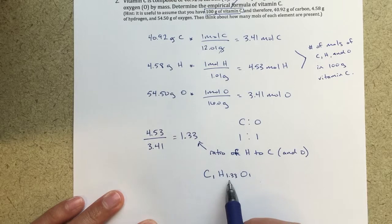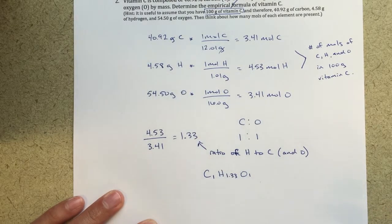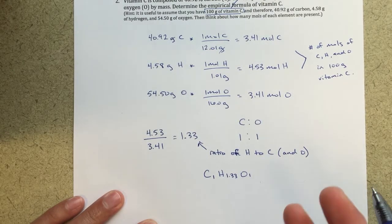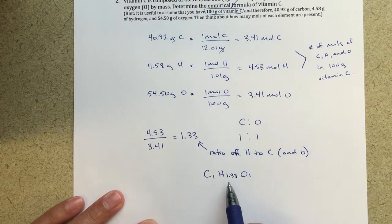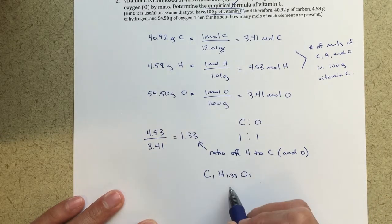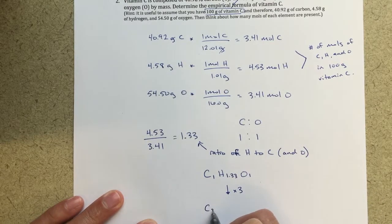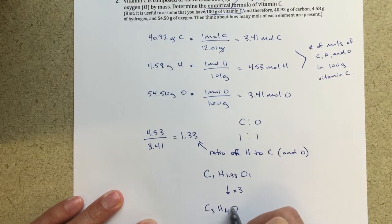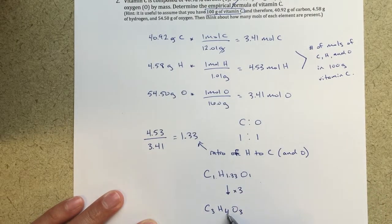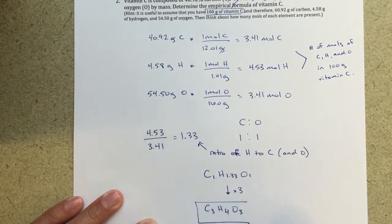The problem is we can't have 1.33 atoms. We can't break atoms into pieces. So the question is, how do I multiply 1.33 by a whole number—by 2, 3, or 4—so that it calculates to a whole number? If I take all these numbers and multiply them by 3, I get C3H4O3. I maintain the same ratio: 1 to 1.33 to 1 becomes 3 to 4 to 3. But now all are whole numbers. This is my empirical formula.